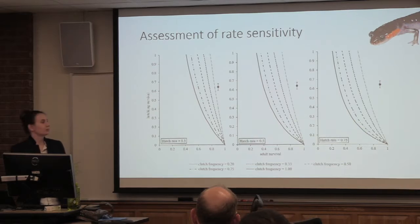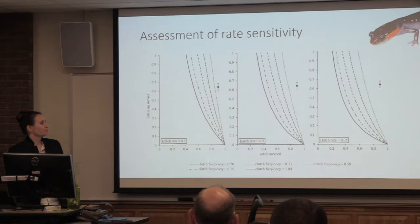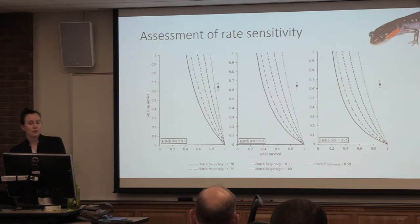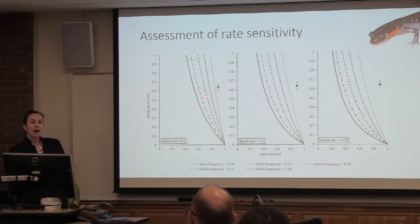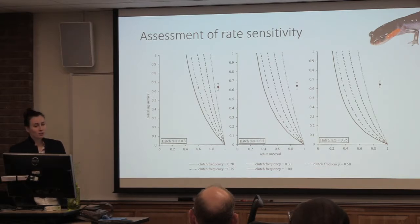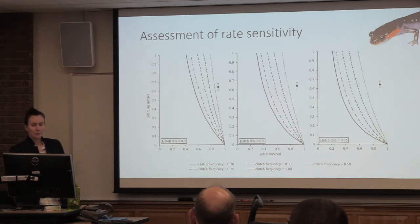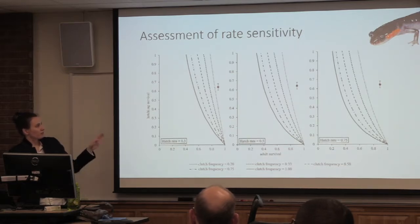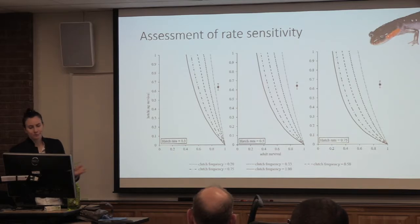We again built isoclines where clutch frequency decreases from 1 to 0.2. The actual rates we used in the matrix model from our Bayesian estimates fall up here — this is a pretty high estimate. Our survival might be a little higher than reality, potentially, or something with that hatch rate that we know isn't very accurate. But in any case, these rates fall in the growing population category.